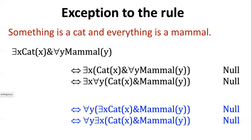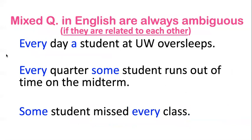So let's go back to those cases of English. You might be thinking, now wait a minute, in English, why do we always have this ambiguity that I said? Well, what I actually mean is you always have this ambiguity if the two quantifiers, if the mixed quantifiers in English have a relation to each other.